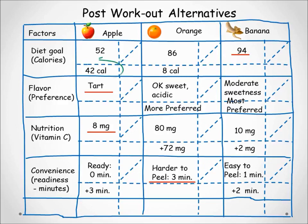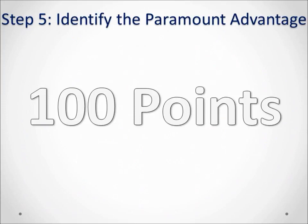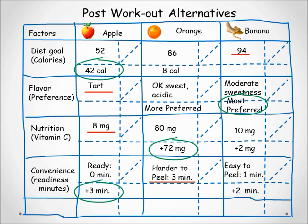Next we circle the greatest advantage in each factor. Having identified the most important advantages for each factor, we then identify the paramount advantage — the greatest among all the circled advantages across all the factors. The paramount advantage is given 100 points and serves as the anchor point against which all advantages will be weighed. For our example, the banana's most preferred advantage in flavor was selected as the paramount advantage and given 100 points.